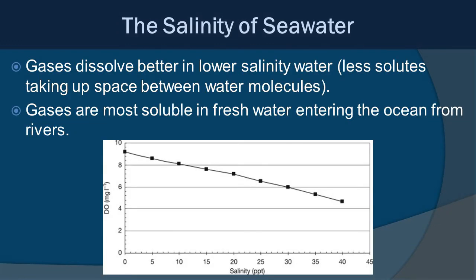For salinity: gases dissolve better in lower salinity water. The fewer solutes taking up space between water molecules, the more dissolved gases you can have. So gases are most soluble in fresh water, especially fresh water entering the ocean. A graph shows milligrams per liter of dissolved oxygen on the y-axis and salinity on the x-axis, and you can clearly see that as salinity increases, dissolved oxygen decreases.